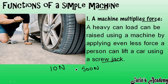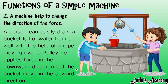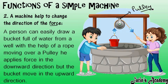This is the beauty of simple machines — how they help us. The next function is that a machine helps to change the direction of force. For example, if you are standing in front of a well and you want to take a bucket up from the well, we use one kind of simple machine called a pulley. We will discuss all these machines one by one, but here just see the example of a pulley.